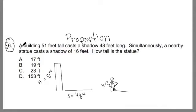It goes something like this. A building 51 feet tall casts a shadow 48 feet long. Simultaneously, a nearby statue casts a shadow of 16 feet. How tall is the statue?